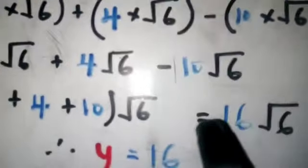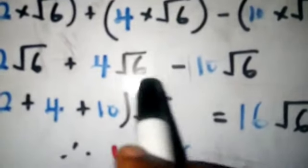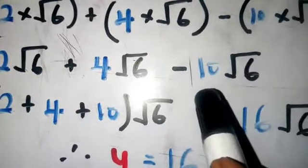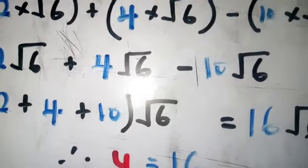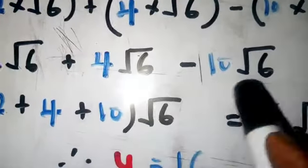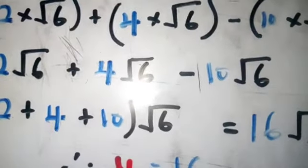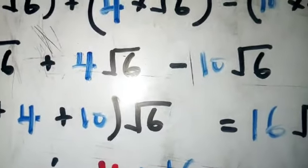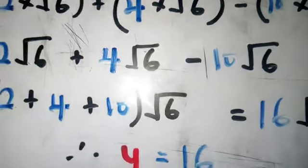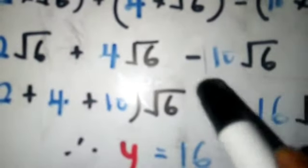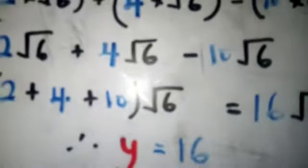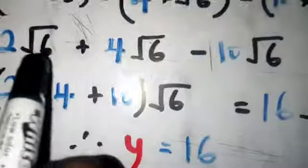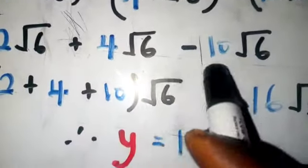Now check: can you add and subtract these? Yes — all the numbers under the radical are the same (root 6). So you add and subtract the outside numbers: 2 plus 4 minus 10. That gives 6 minus 10, which equals minus 4. So the result is minus 4 root 6.